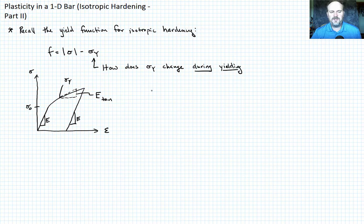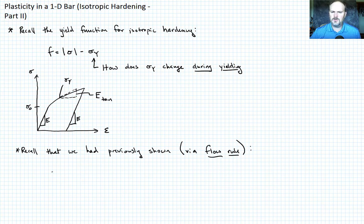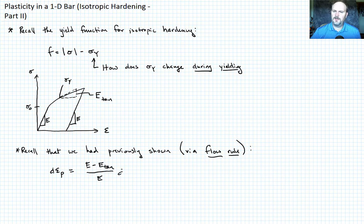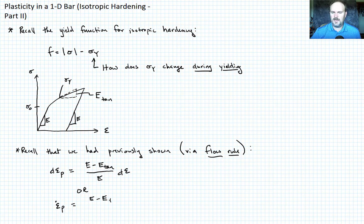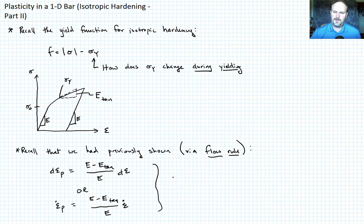Recall that we had previously defined, via the flow rule, the relationship between plastic strain and total strain. What we showed was that the plastic strain increment d_epsilon_p equals the quantity (E minus E_tan) divided by E, times the total strain increment d_epsilon. Or in rate form, epsilon_p_dot equals (E minus E_tan) divided by E times epsilon_dot. This occurs only during yielding.